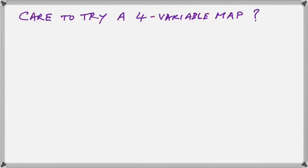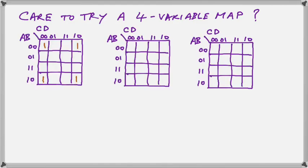Would you care to try a four-variable map? Here we've drawn three of them, and we've put on four ones in the corners. It turns out these four ones are all adjacent to each other because all the edges touch each other. It's as if your Karnaugh map was wrapped around a ball so that all edges touch each other.